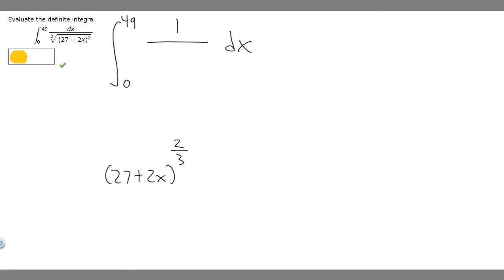So that just makes it a bit easier. Now what we want to do is, since we're using u-substitution, we have to decide what u is going to be. We should probably set this part equal to u, right? So our u is going to be equal to 27 plus 2x.